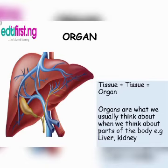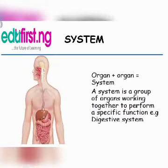When we talk about the organ, an organ is formed when one tissue is added to another tissue. Organs are what we usually think about when we think about parts of the body. Examples include the liver, the kidney, and so on.